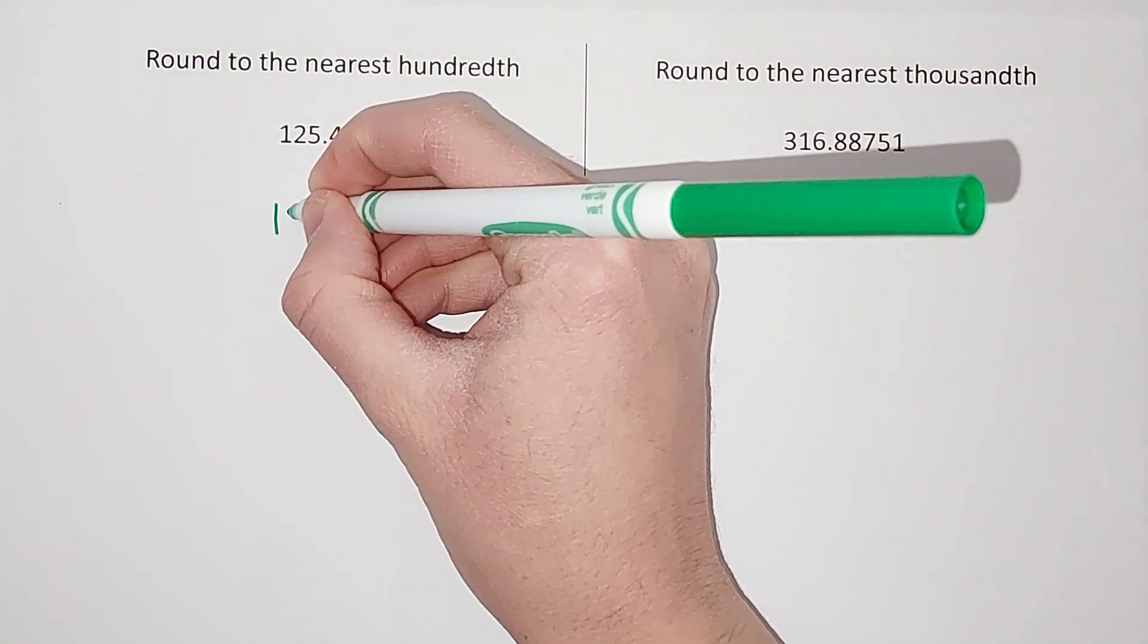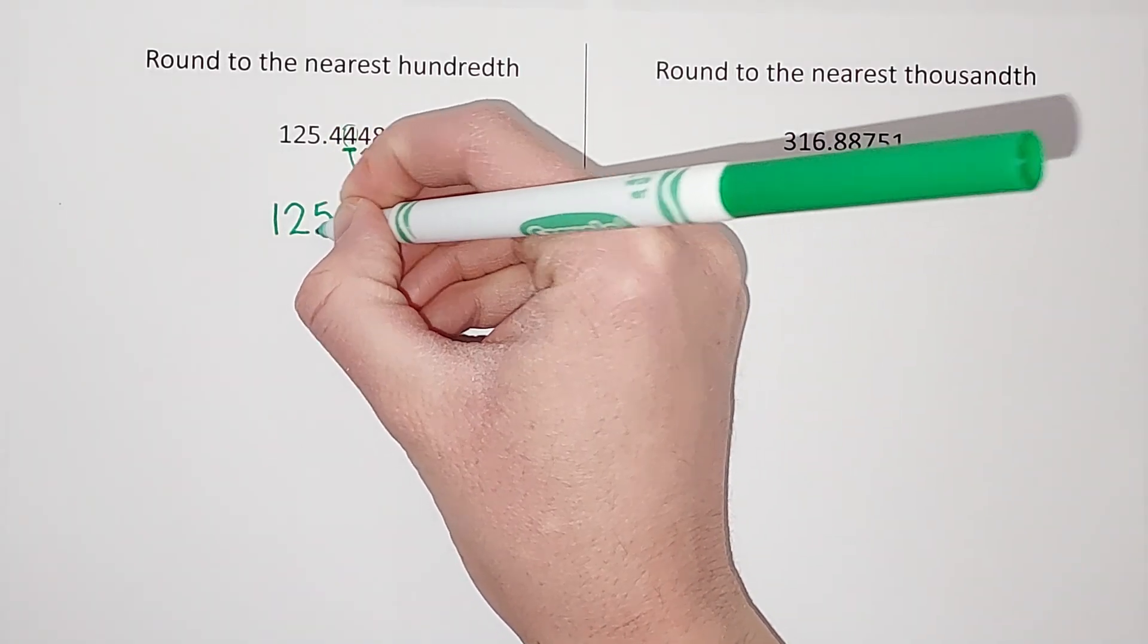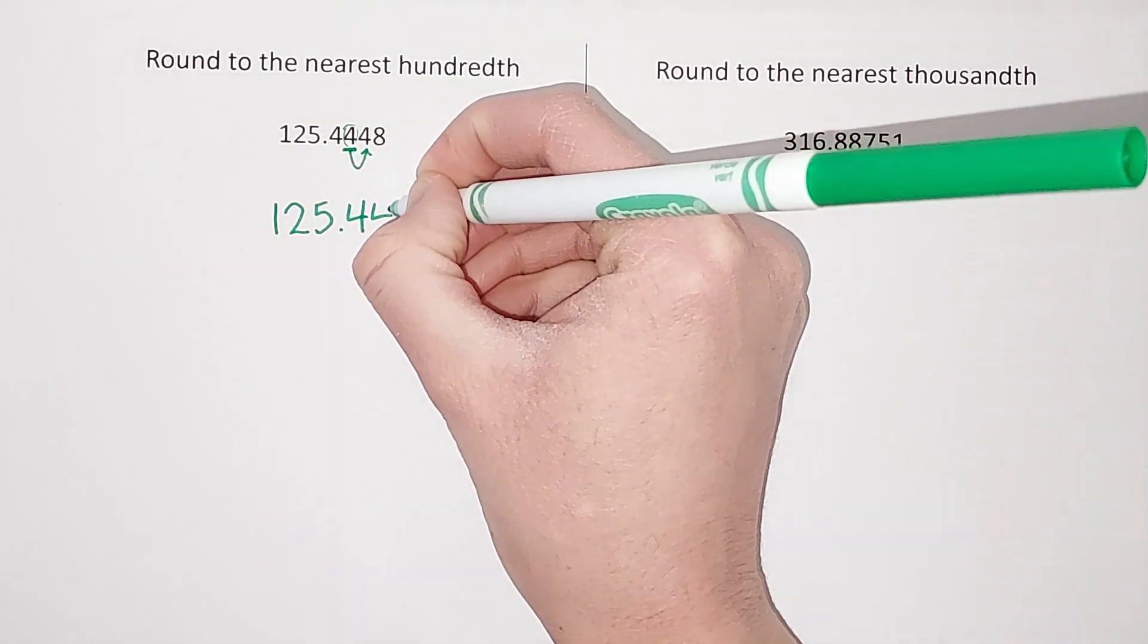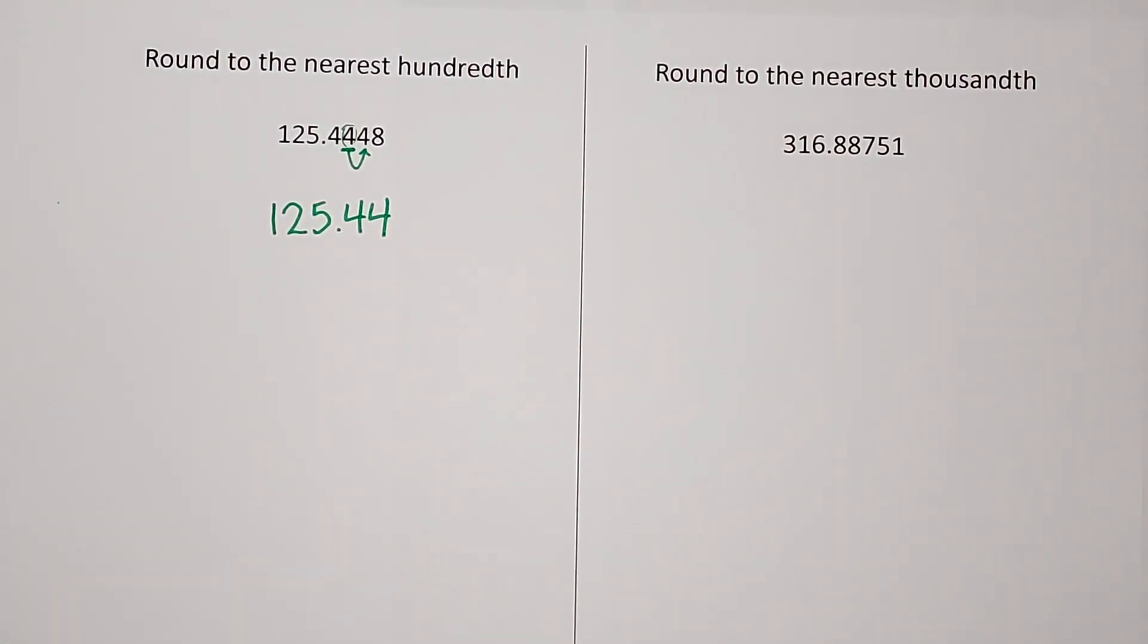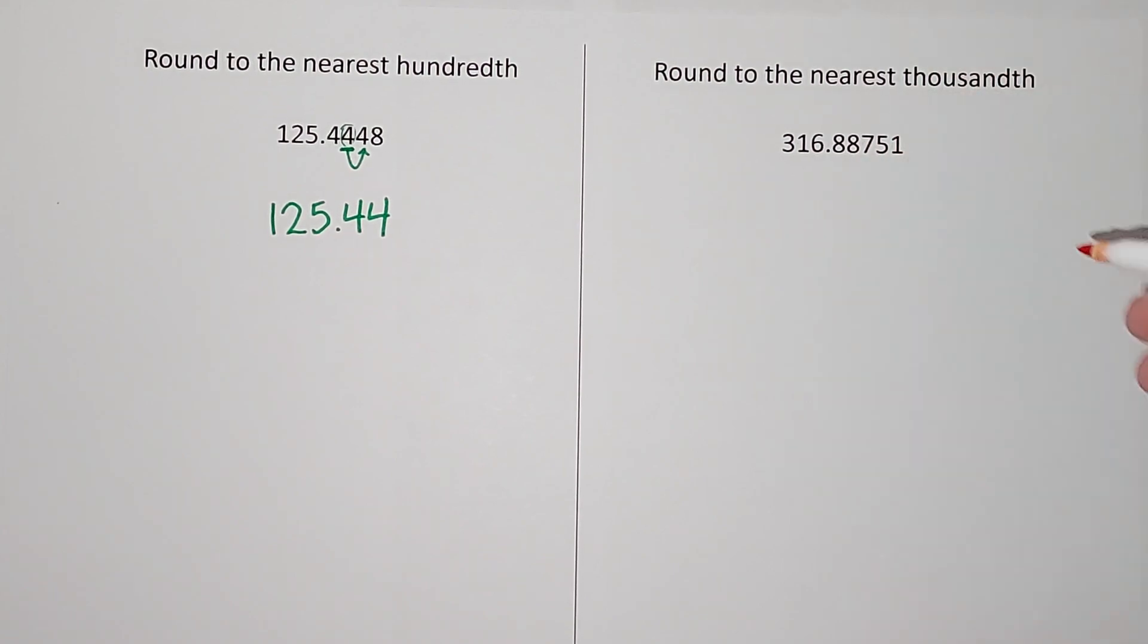Okay, next one wants to the nearest thousandth. Thousand has three zeros, right? So they want three numbers after the decimal place. So this is either going to stay a seven or go up to an eight. Okay, so we look at the one behind.